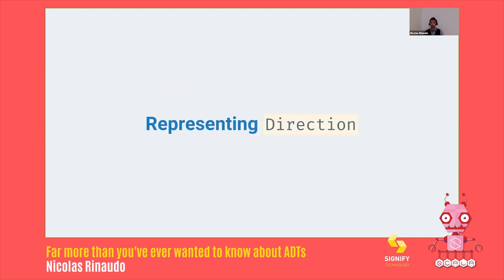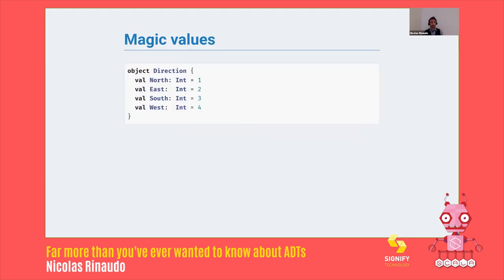The first step is to try and model direction. Remember, we have four directions: north, south, east, and west. And we want to turn that into some sort of data structure. These are a set of known values. Back when I started studying computer science, I was told that the best way of doing that was to use magic values — open a namespace called direction and stick some random integers in them and name them. So north is one, east is two, south is three, and west is four, for example.